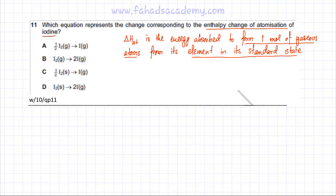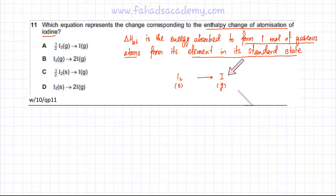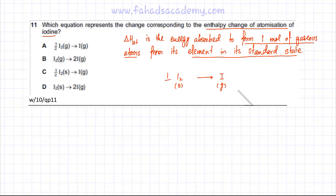For the enthalpy change of atomization of iodine, we want one mole of gaseous iodine atoms from its element in its standard state. Iodine exists as I₂ — a diatomic molecule — and it is a solid at room temperature. Since we need one mole of gaseous iodine atoms, the starting material will be ½I₂.